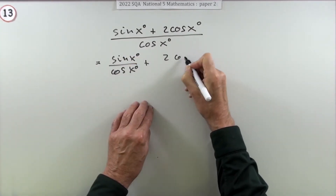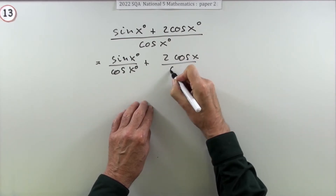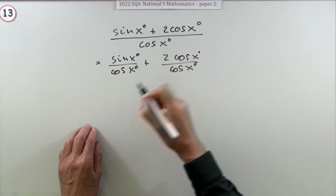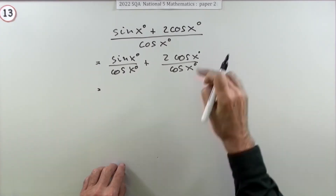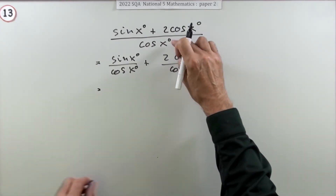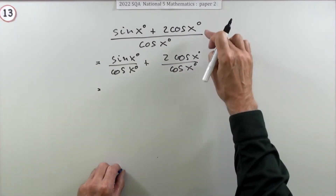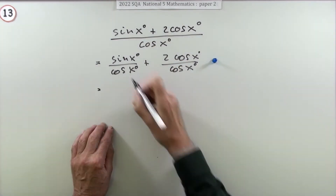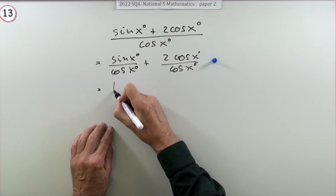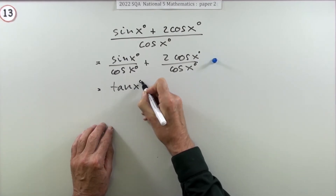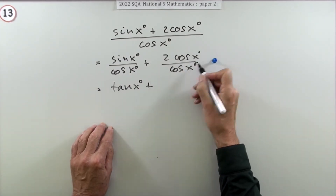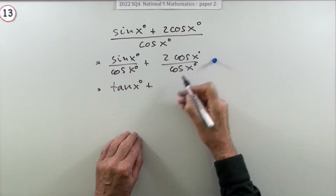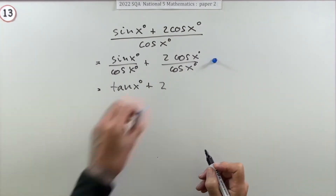...and 2cosx over cosx. They won't penalise you for not putting in the degree signs. Separating it out — that's what that dividing line means — both terms get divided. That's the first mark. Sinx over cosx you should recognise as tanx, and of course 2cosx over cosx, since they're the same, will cancel out leaving just 2. And that's the final mark.